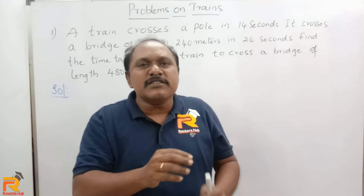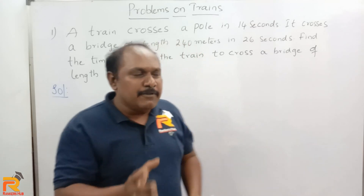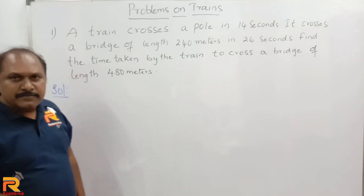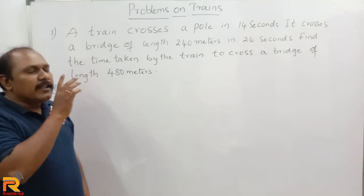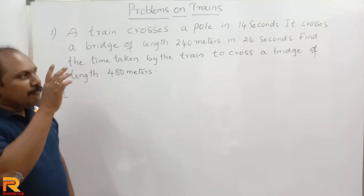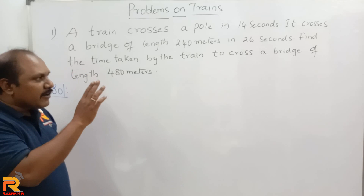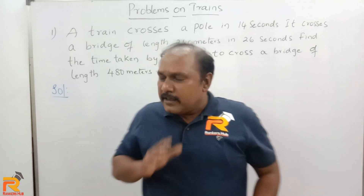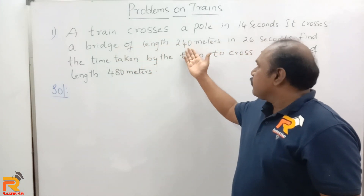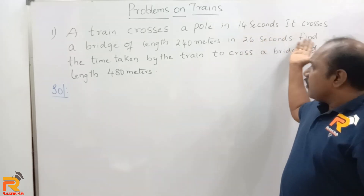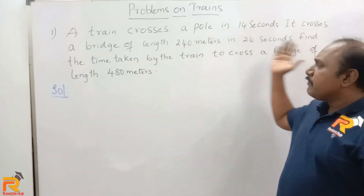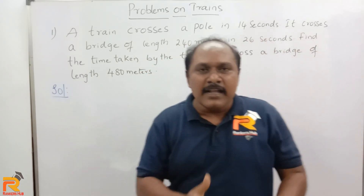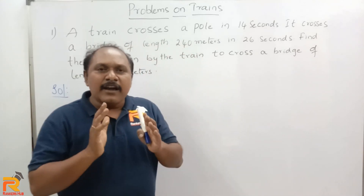Now let us look at the first question. A train crosses a pole in 14 seconds. It crosses a bridge of length 240 meters in 26 seconds. Find the time taken by the train to cross a bridge of length 480 meters. Now, what is the mistake students generally make here? When they see that crossing 240 meters takes 26 seconds, they simply double it and say 480 meters takes 52 seconds — which is a wrong answer.